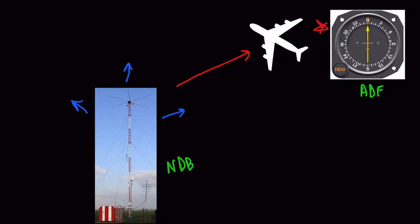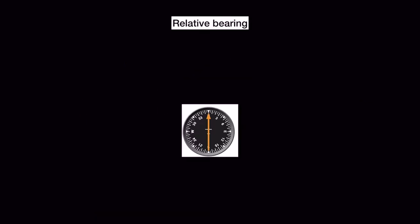What we as pilots see on the ADF equipment is the relative bearing of the beacon, displayed on an instrument known as the RBI or relative bearing indicator. The RBI has a compass card that is fixed with north set at the nose of the aircraft. This compass card is fixed, and the orange needle shows the relative bearing of the NDB station from our aircraft.